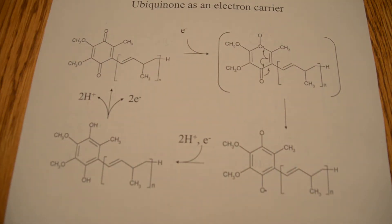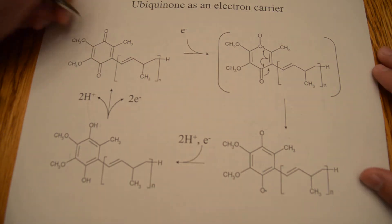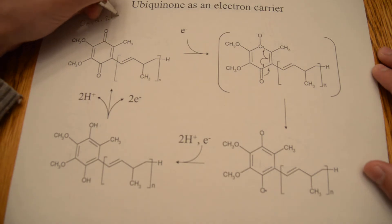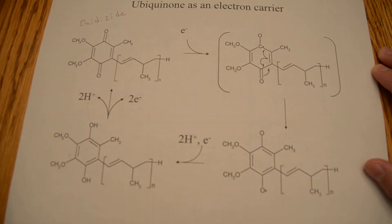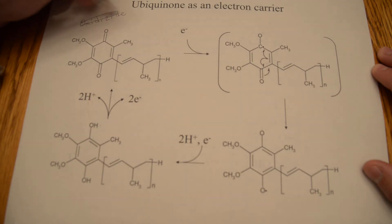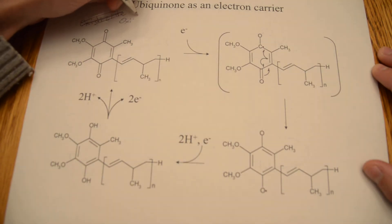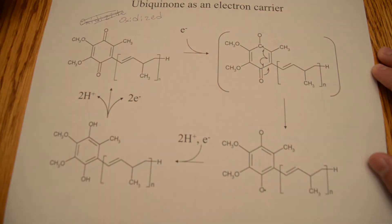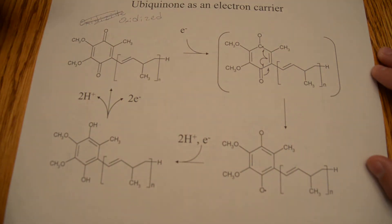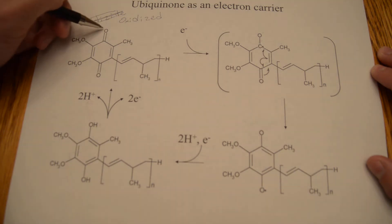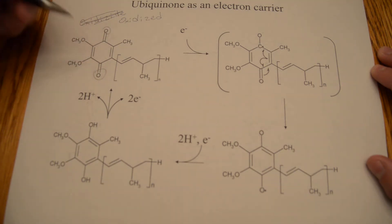So here you can see the structure of ubiquinone right here. This structure is in its oxidized form. These two oxygen molecules right here are the redox active sites.